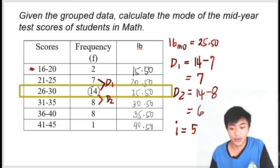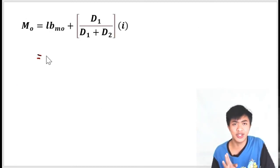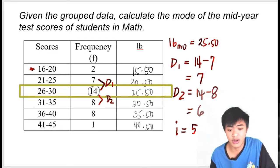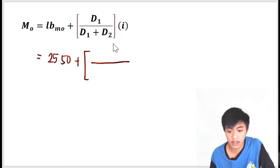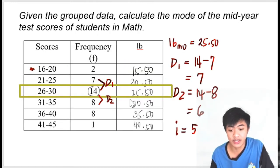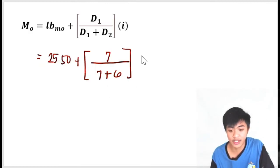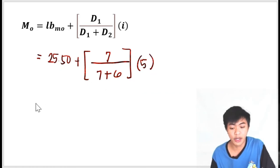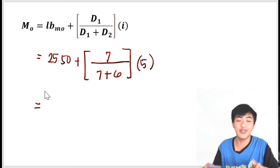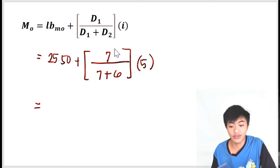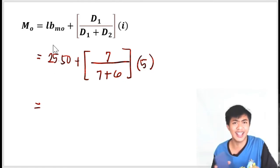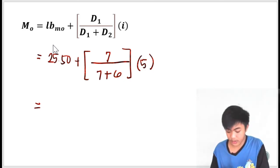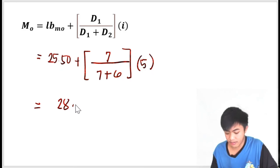Now we're ready to substitute the components of our formula. The lower boundary of the modal class is 25.50 plus D sub 1, which is 7, over D sub 1 which is 7 plus D sub 2 which is 6, multiplied by the class size which we just counted as 5. I could input this directly into the calculator, but if you have doubts about your calculator, you can do it step by step. You can solve what's inside first, then multiply it by 5, then add it to 25.50. But for me, it's easier to input everything directly into the calculator, and the answer is 28.19.